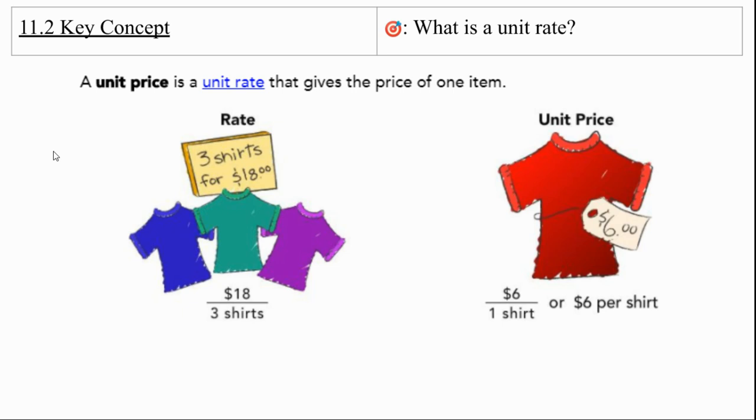A unit price is a unit rate that gives the price of one item. So it's the price per item. So when we look at the first one, we have three shirts for $18. So we can do $18 divided by three shirts or 18 over three for every three shirts that costs $18. And then we have the unit price, which is $6 for every shirt or $6 per shirt. Remembering that one and per mean the same thing.